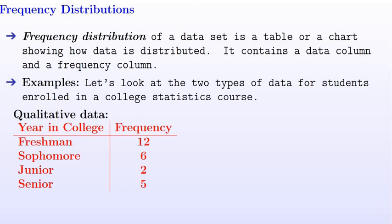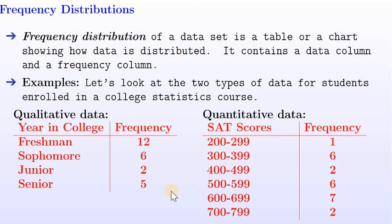Now let's look at the example for quantitative data. One column has SAT scores given in class intervals, and the other column has frequency.